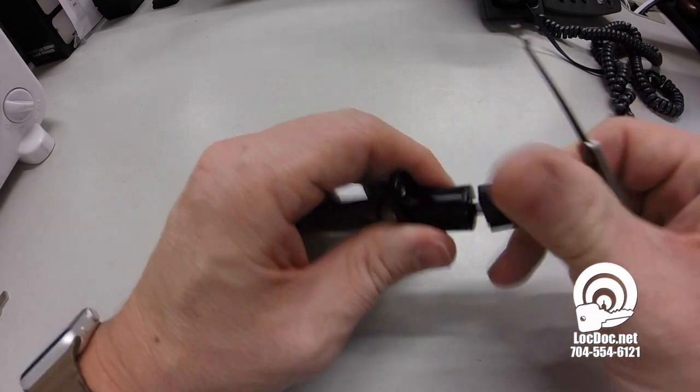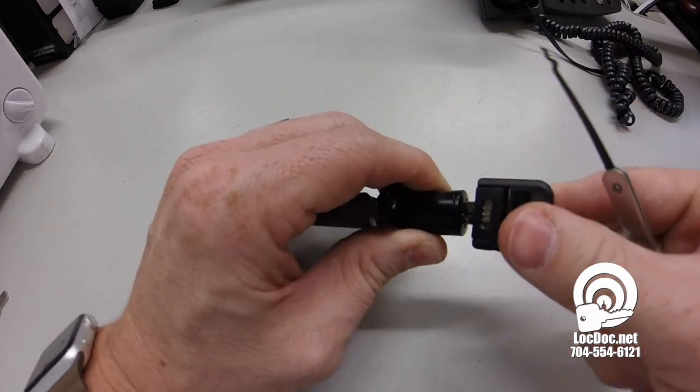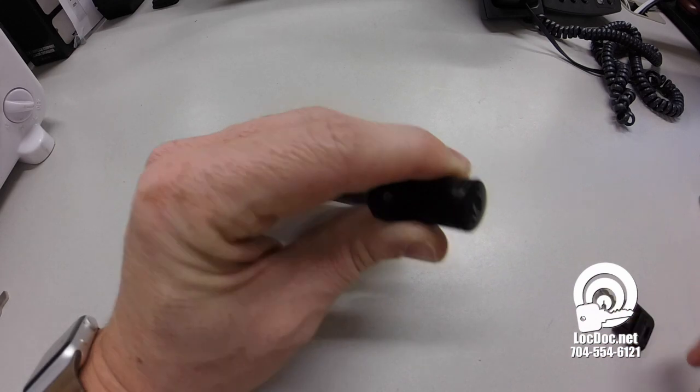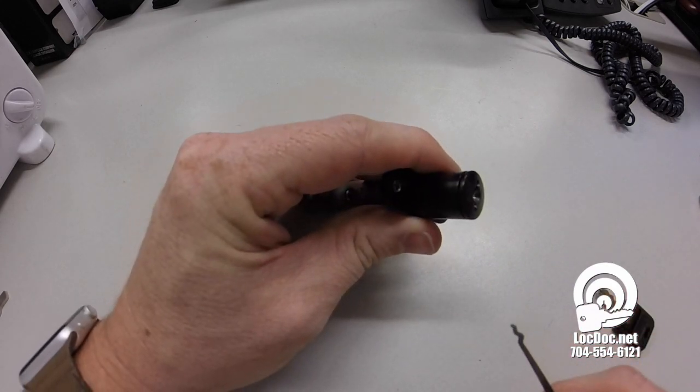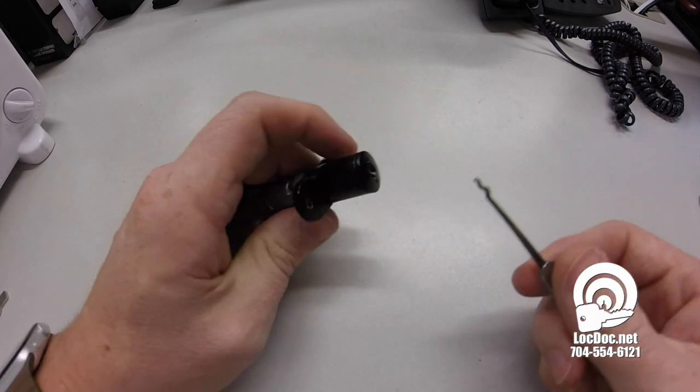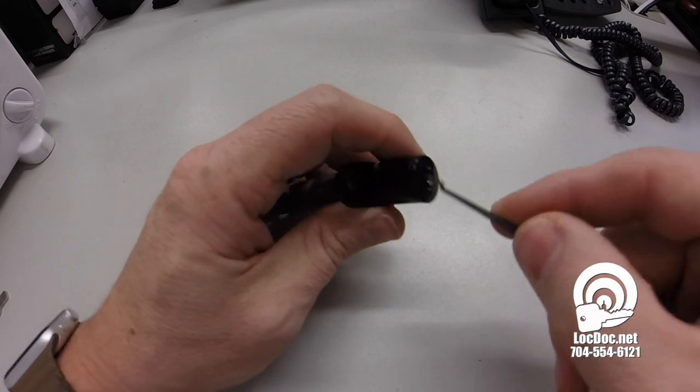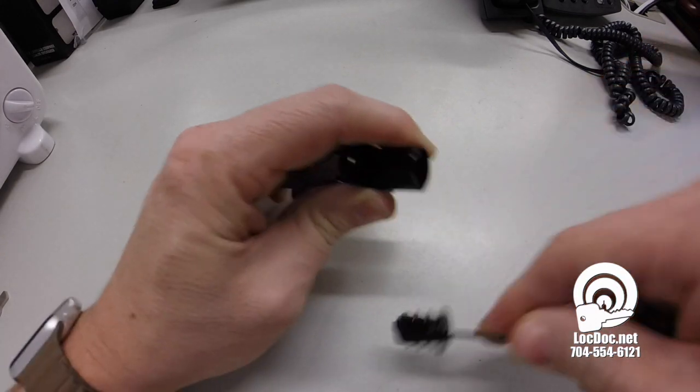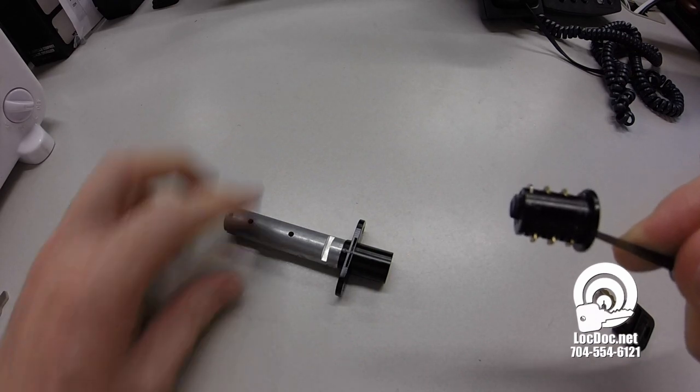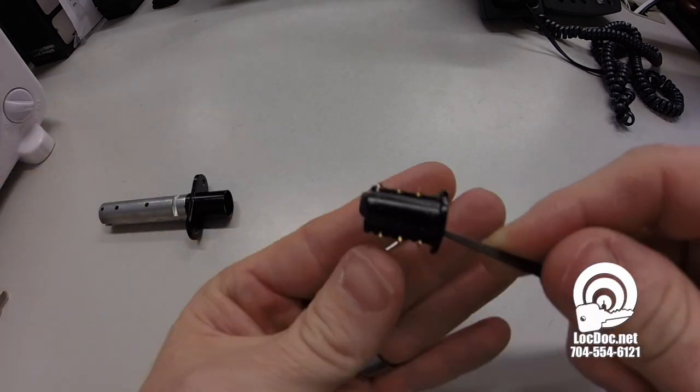In this particular system, this particular lock, we have an operating key, so that's a positive for us. If not, we could just pick it to the correct position. You take a pick, place it in, and you're just going to press down and pull out, or press up and pull out depending on the position.